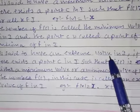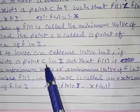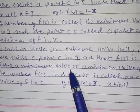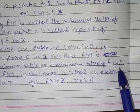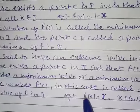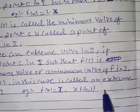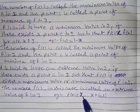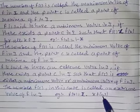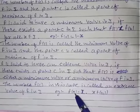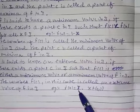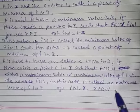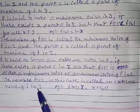F is said to have an extreme value in I if there exists a point c in I such that f(c) is neither the maximum value nor the minimum value of f in I. The number f(c) is then called the extreme value of f in I. For example, f(x) = x where x belongs to [0, 1]: putting 0 gives 0, putting 1 gives 1, so it does not have any minimum or maximum value — that is called an extreme value of f in I.